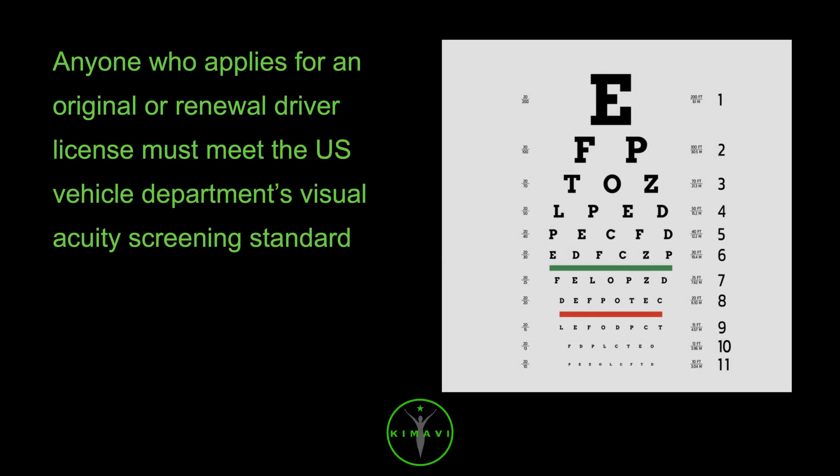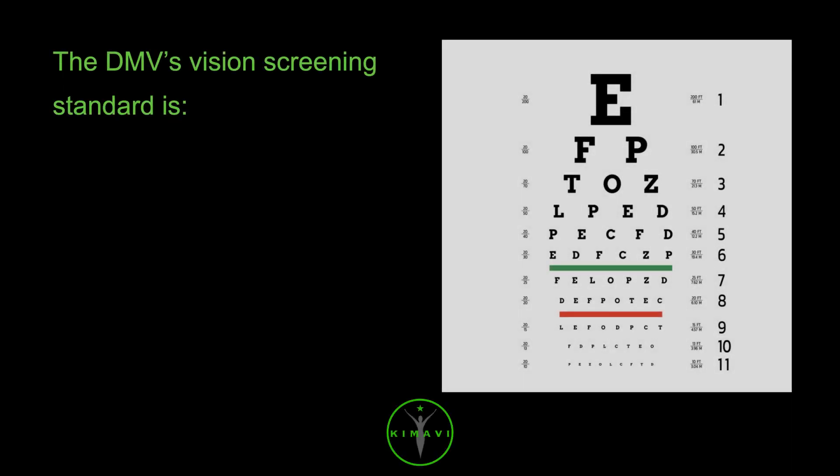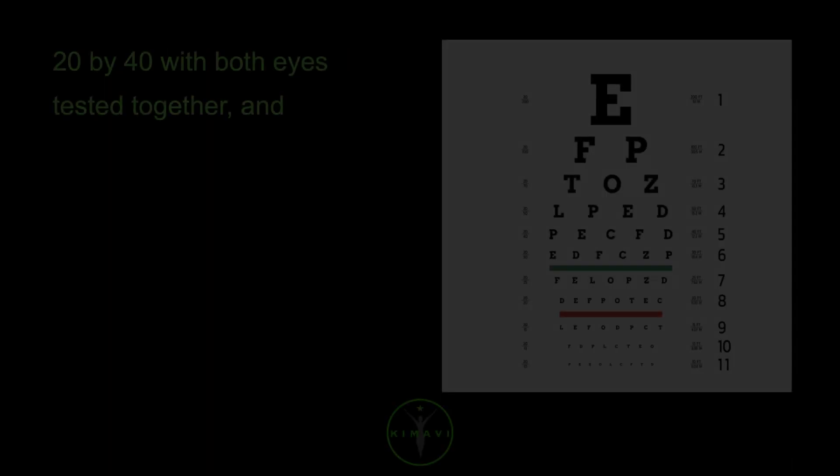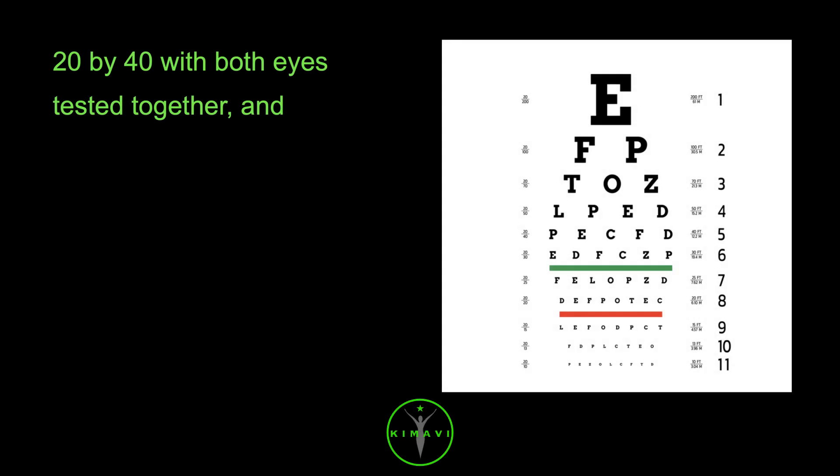Anyone who applies for an original or renewal driver license must meet the U.S. Vehicle Department's visual acuity screening standard. The DMV's vision screening standard is 20 by 40 with both eyes tested together, and 20 by 40 in one eye, and at least 20 by 70 in the other eye.